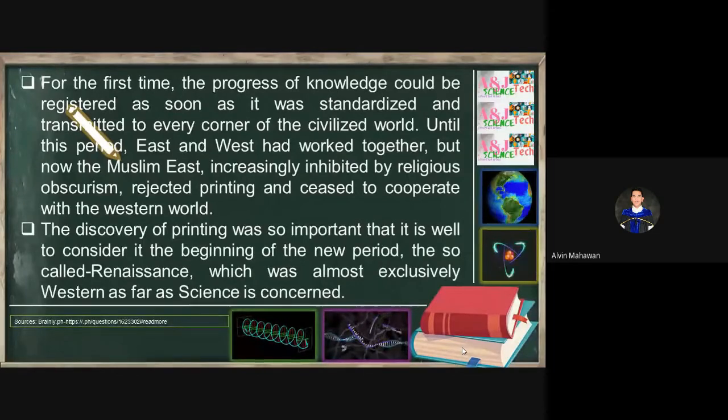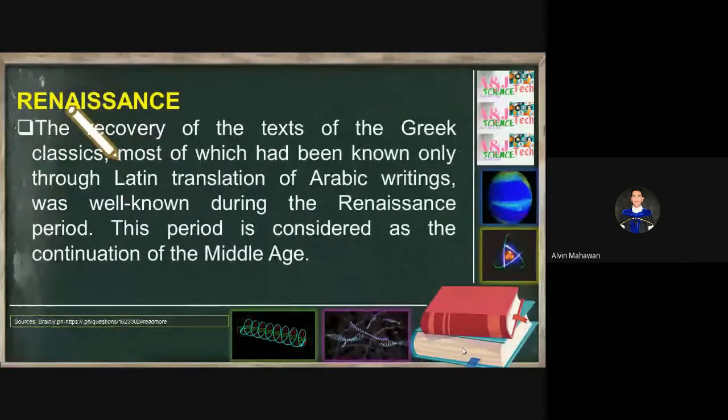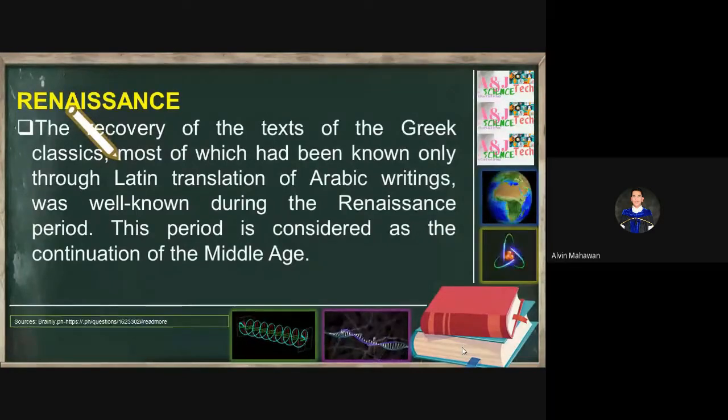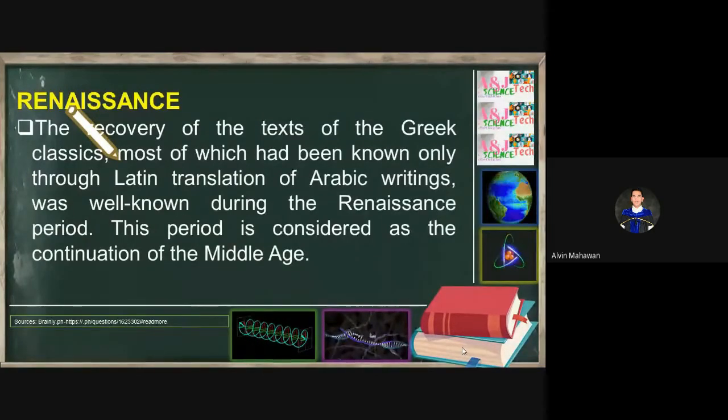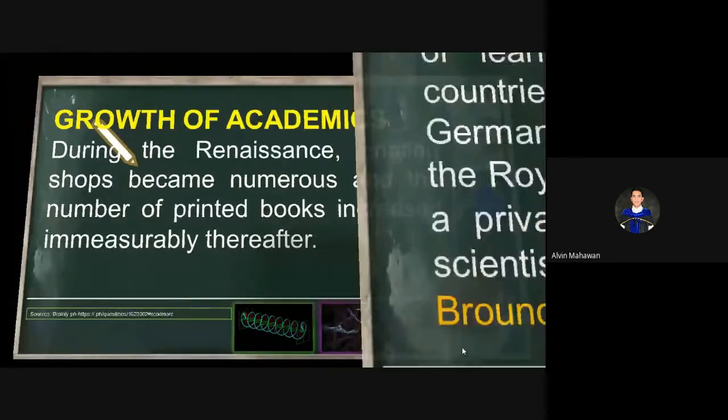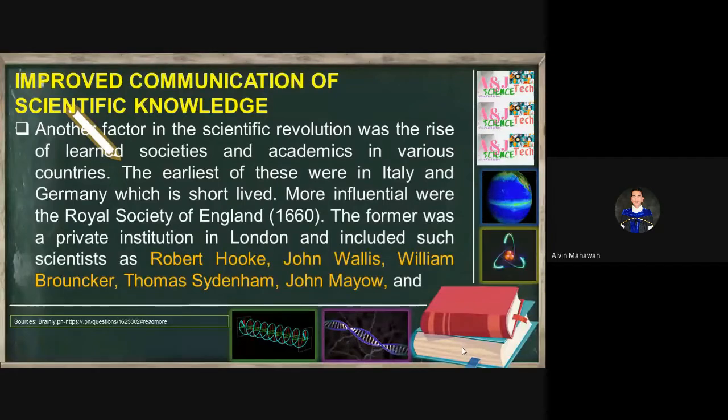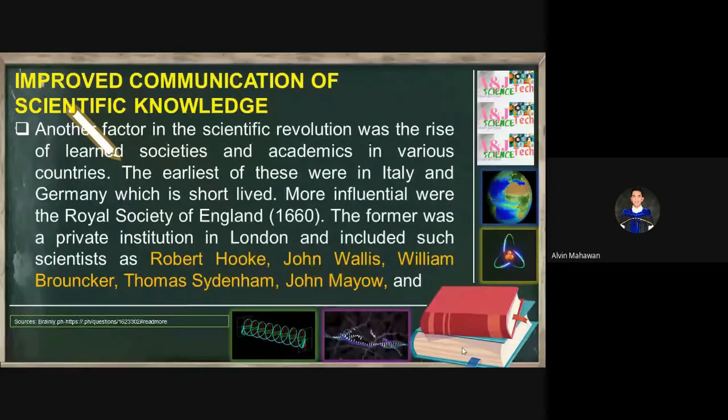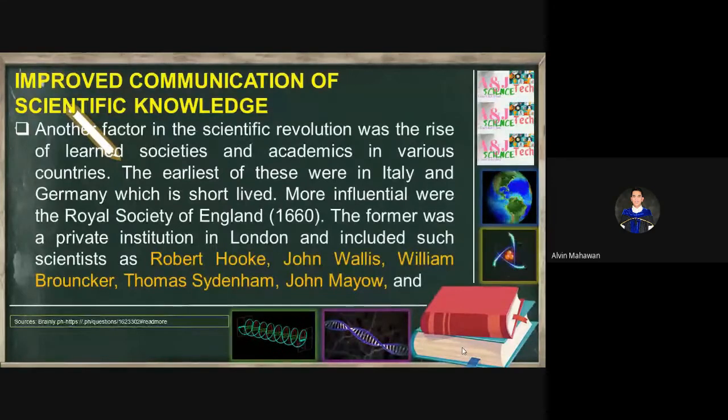The discovery of printing was important that it is well to consider it in the beginning of the so-called Renaissance, which is almost exclusively Western as far as science is concerned. This is where the Renaissance or the rise of modern invention began, wherein science started to prosper during the Renaissance period. In this Renaissance, the discovery of the text of the Greek classics, most of which had been known only through Latin translation of Arabic writings, was well known during the Renaissance period. This period is a continuation of the Middle Ages during the medieval time and the growth of academics during Renaissance period. Here comes now the establishment of education. There is now mandatory schooling for children. Everyone needs to study. The printing shops became numerous and the number of printed books increased immensely thereafter.